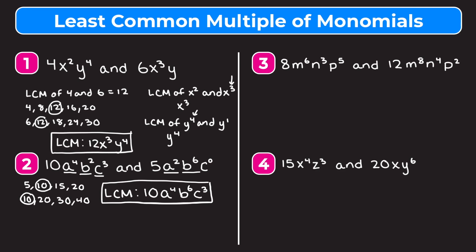Moving on to example 3, we have 8m to the sixth n to the third p to the fifth and 12m to the eighth n to the fourth p squared. Let's find the LCM of 8 and 12. Multiples of 8: 8, 16, 24, 32; multiples of 12: 12, 24, 36, 48. The least common multiple of 8 and 12 is 24.